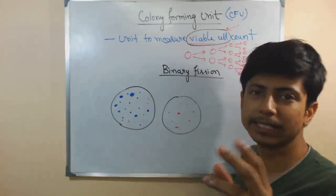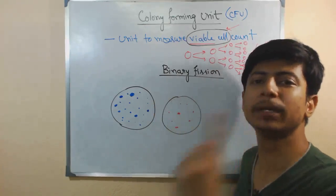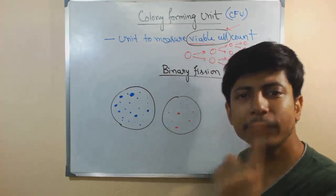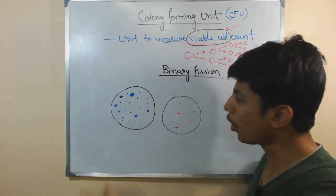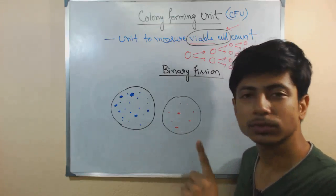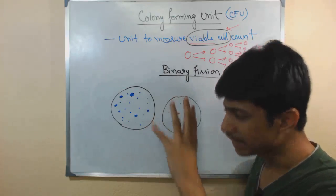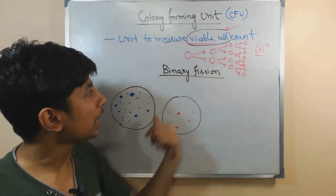But a dead bacteria will never give rise to a bacterial colony. Bacterial colonies will only be produced from living bacteria. So whatever number of colonies we found, we can tell all of them developed from living bacteria. We can tell that yes, these are the bacteria which are actively dividing.